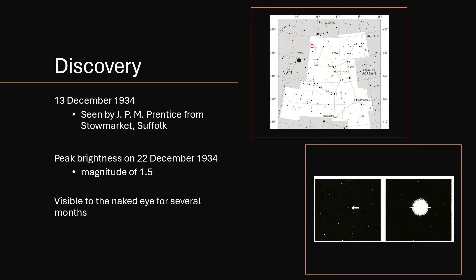You can see down at the bottom right there we have the before with the arrow pointing out the faint star at about magnitude 15 or something, and then afterwards just how bright that star had become in another photograph there. Really tremendous change in brightness.